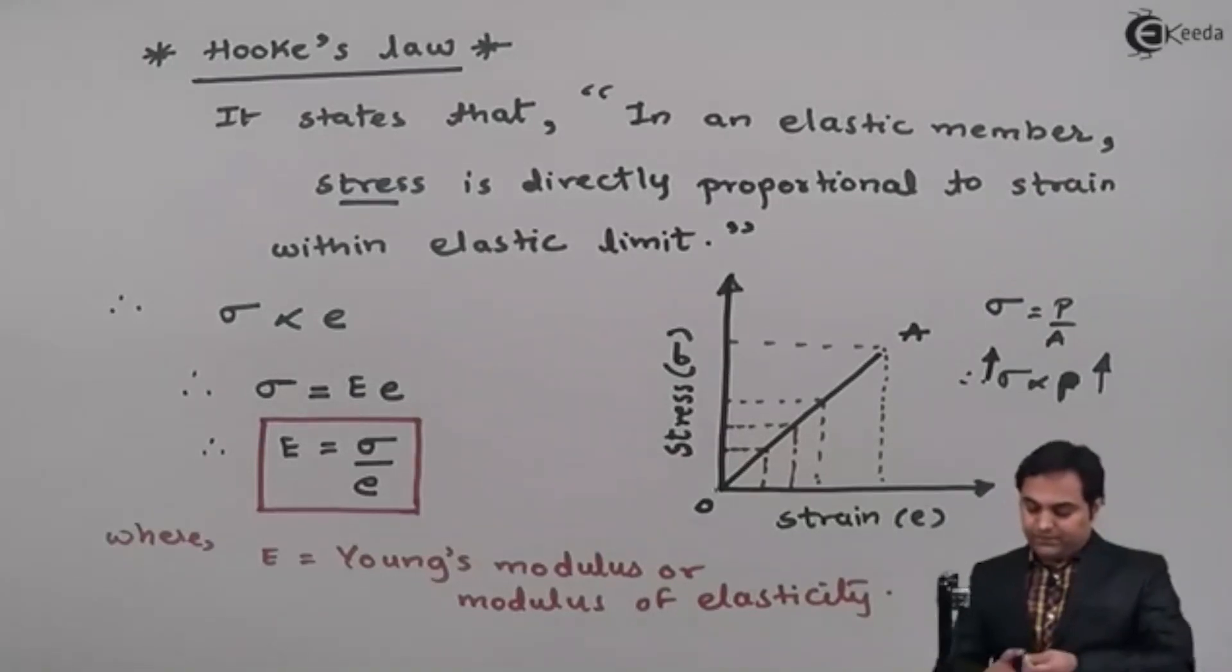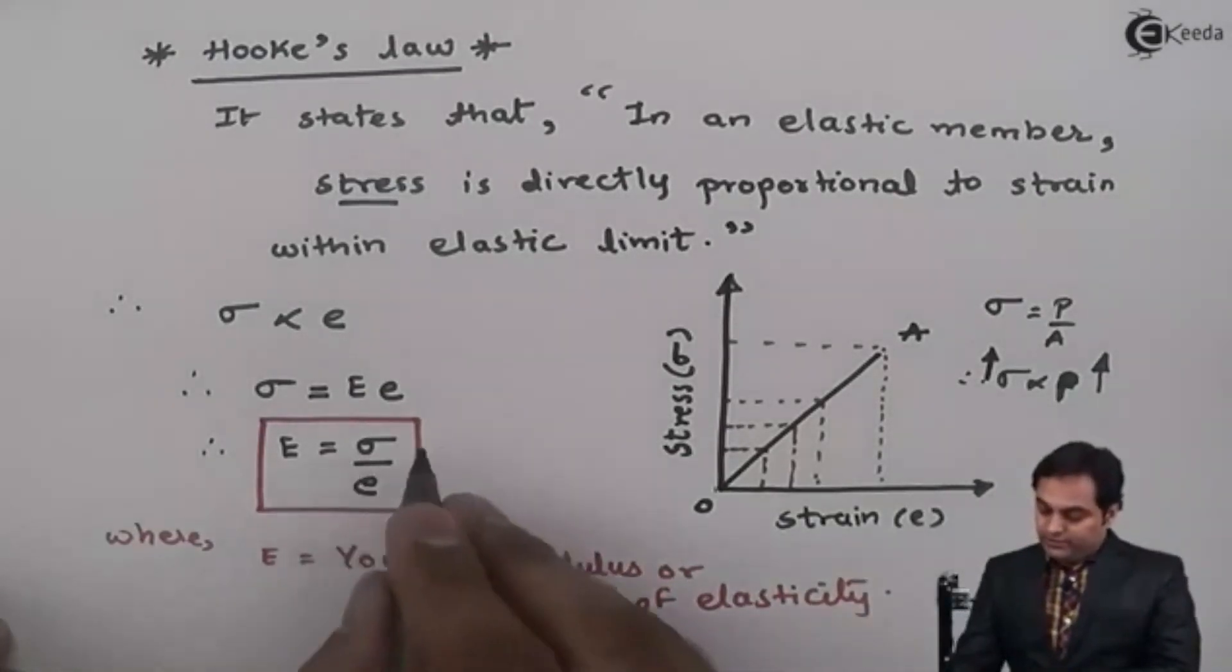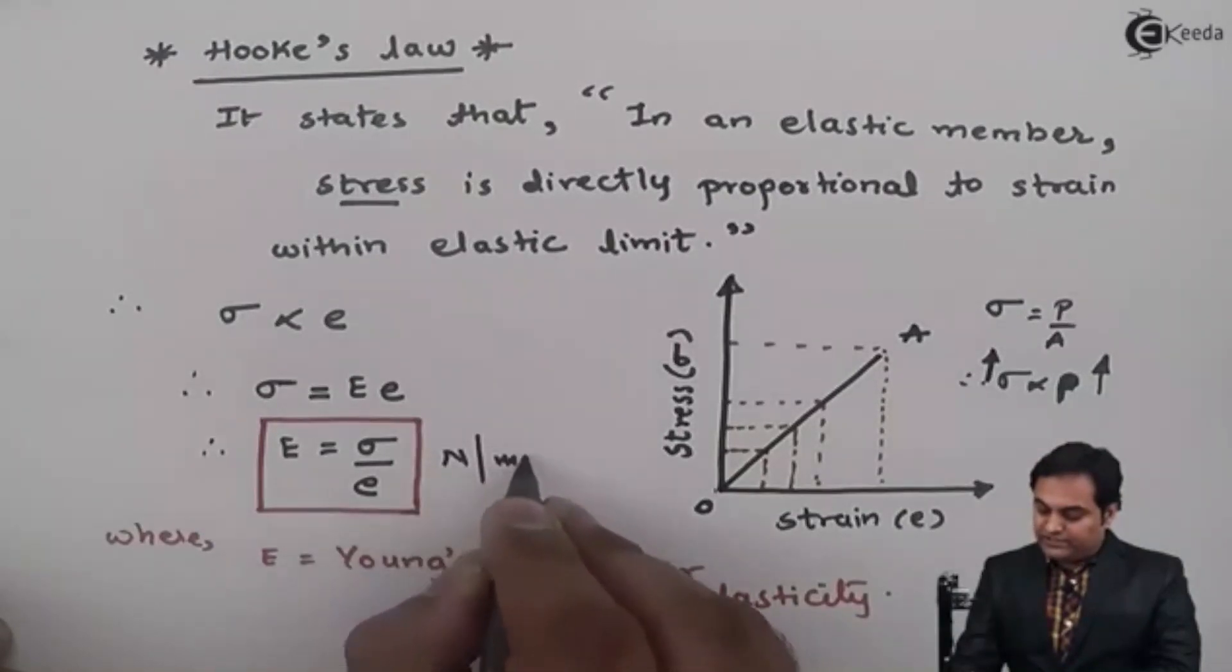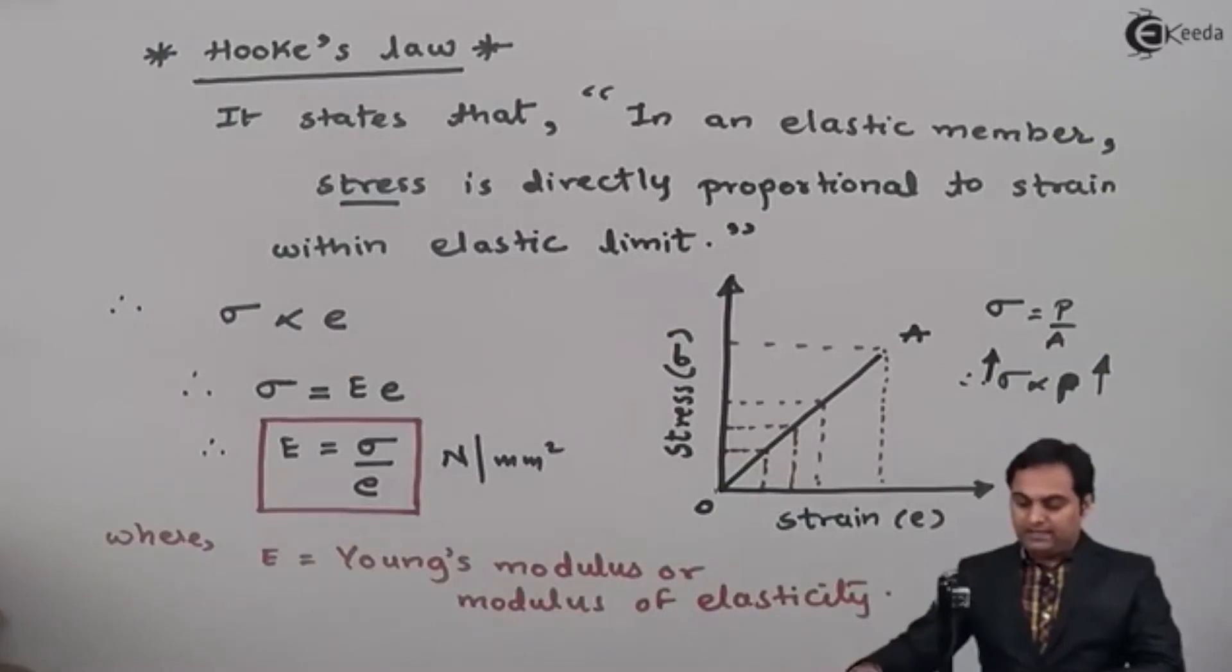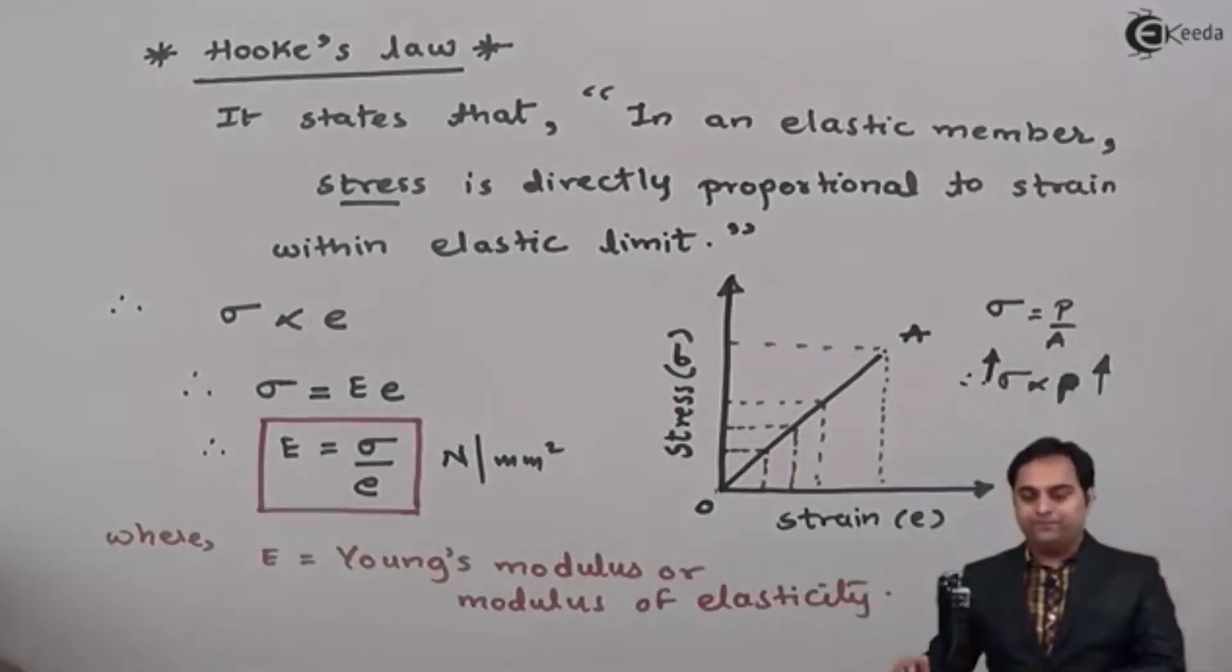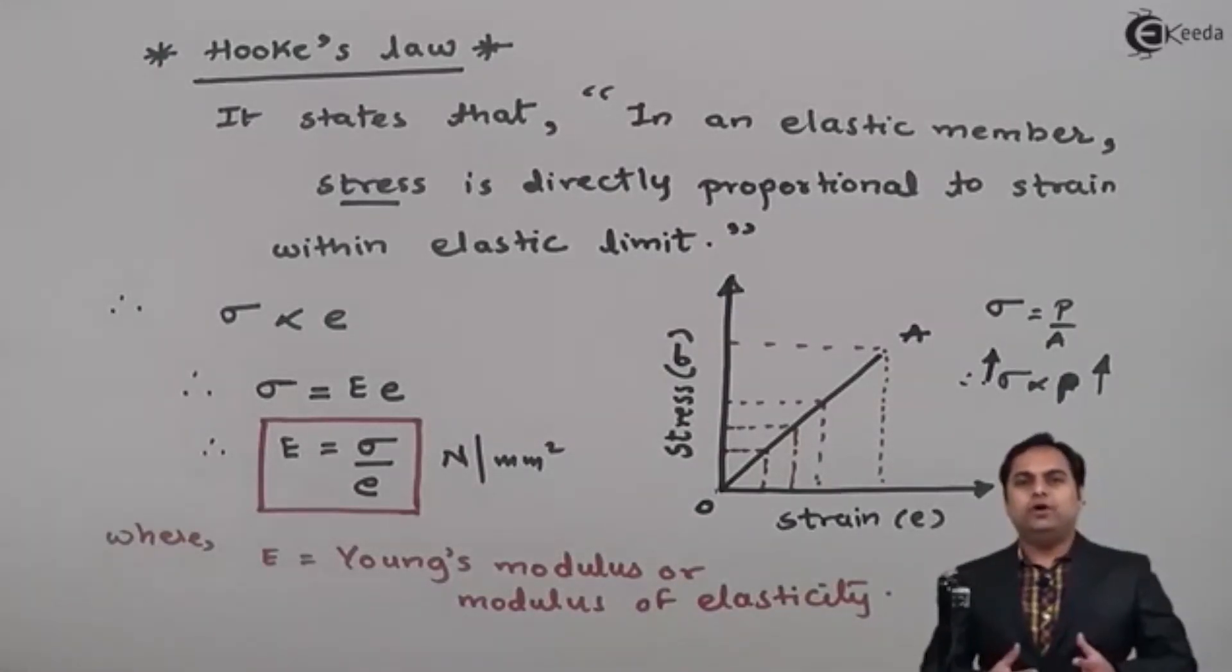So here this unit of Young's modulus will be same as the unit of stress, that is Newton per mm square, because strain doesn't have a unit. And so with the help of Hooke's law we are getting the Young's modulus. So in this video we have seen what is meant by Hooke's law and how to get Young's modulus from Hooke's law.